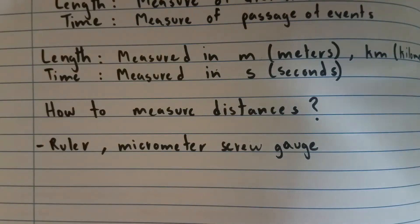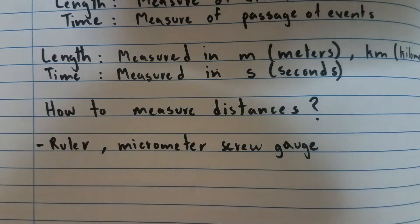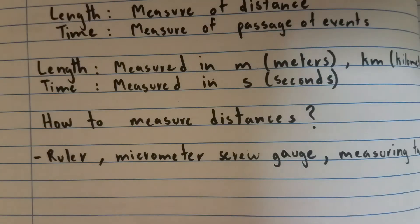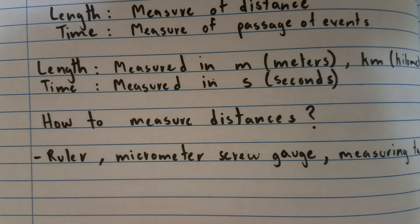You could also use a measuring tape. It's used for measuring really long distances. Some can even measure up to 100 meters. And they're often used to measure distances on football fields or basketball courts.